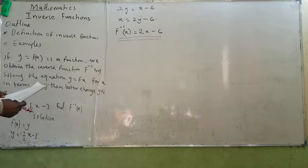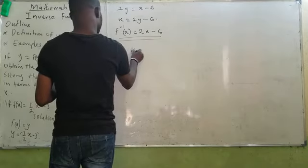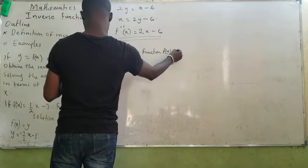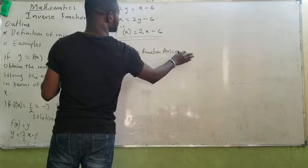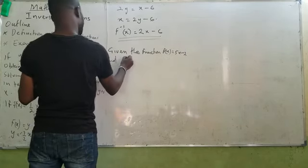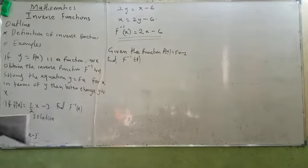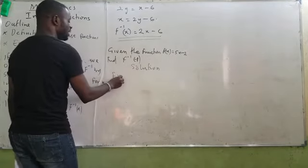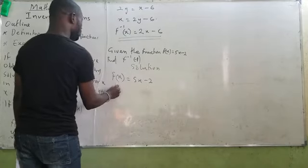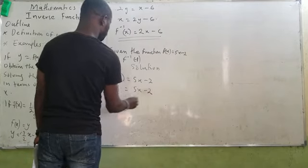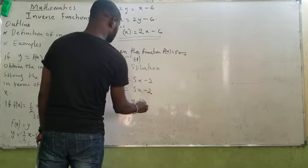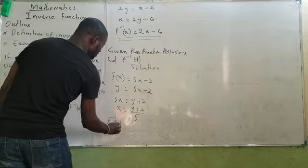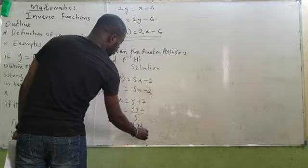There are some problems — for instance, given the function f of x equals 5x minus 2, find f inverse of minus 1. Now it's not hard. What you just need to do is work the way I told you: f of x equals 5x minus 2, so y equals 5x minus 2. Then 5y equals y plus 2, and x equals y all over 5.